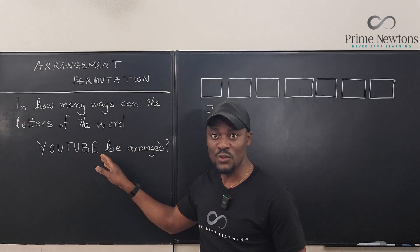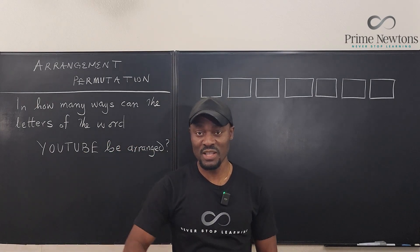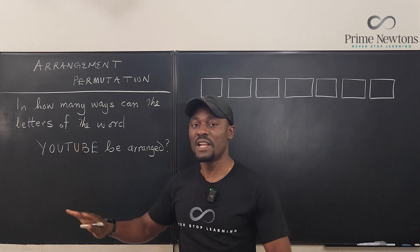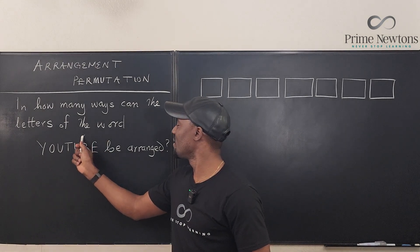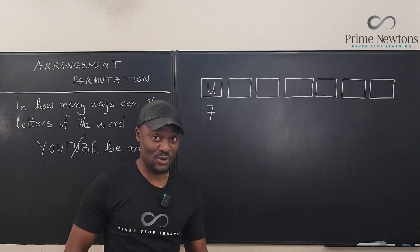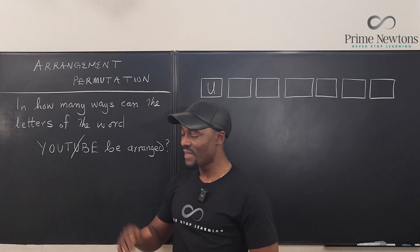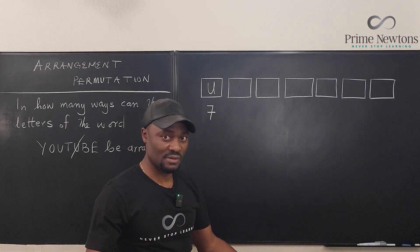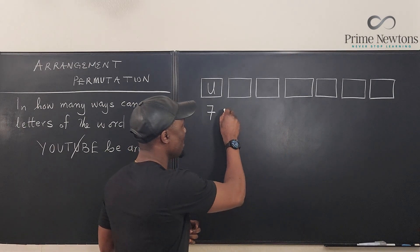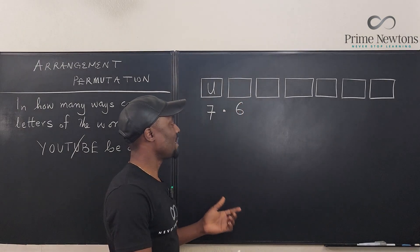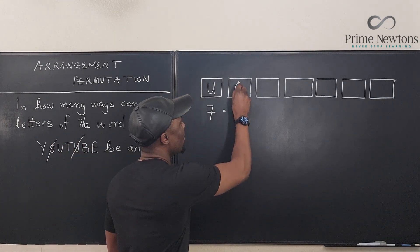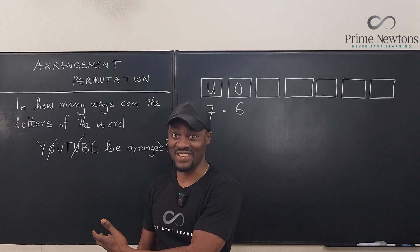You must have picked one of those seven, so you're left with only six letters for the next box. For theoretical purposes, let's say I picked the first U. Assuming that's what I picked, when I go to the next box I only have six options. So because I only have six options remaining, I can only have six options for the next box. Let's assume I picked the letter O. To pick the next one after that, I have five options.